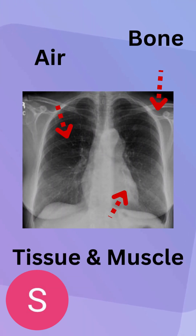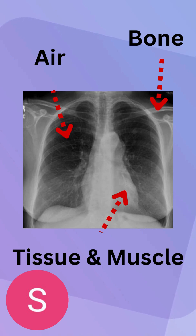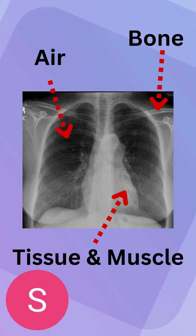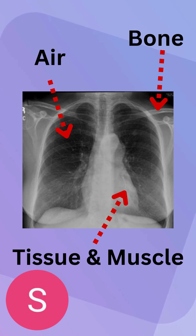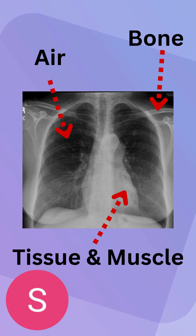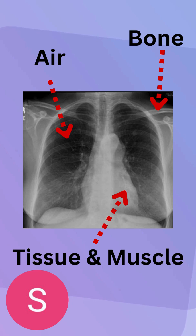We're just always going to have this up now. Just to establish your color gradient, just in case. Pay attention to where R and L is, because that establishes anatomical orientation of the patient. We also have the air markings, the bone markings, tissue and muscle — according to our background, which is going to be black.